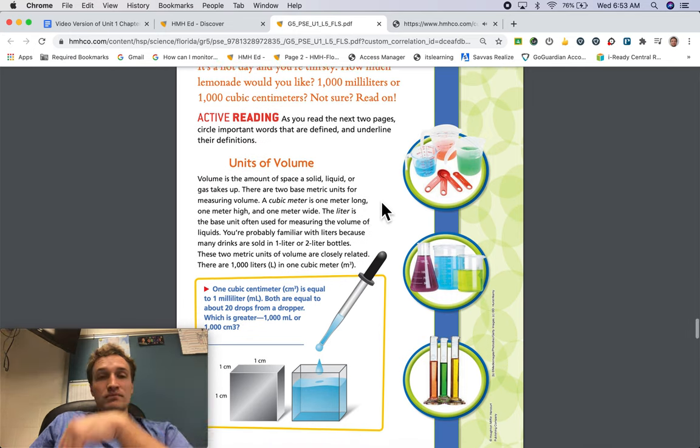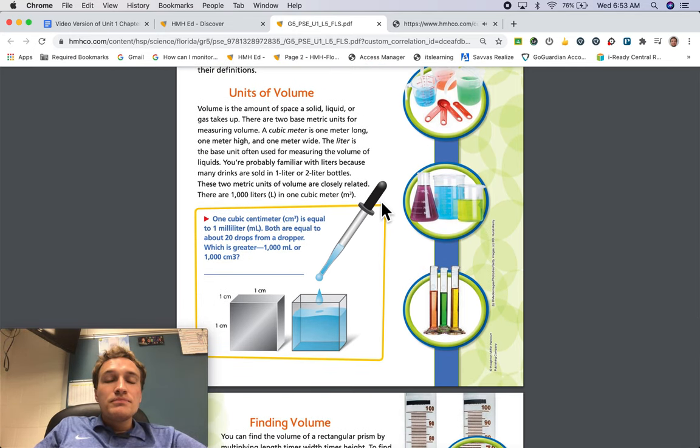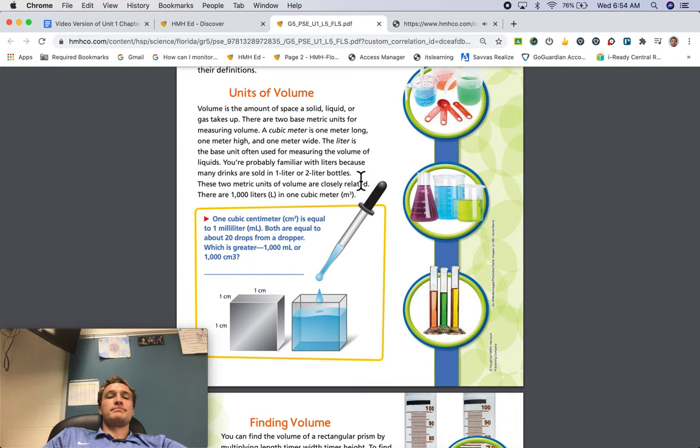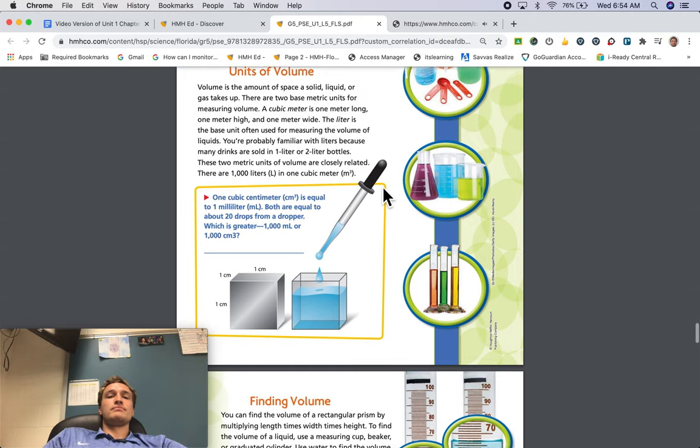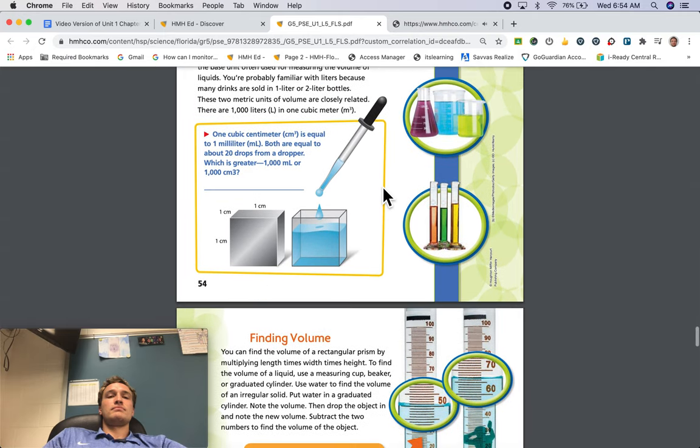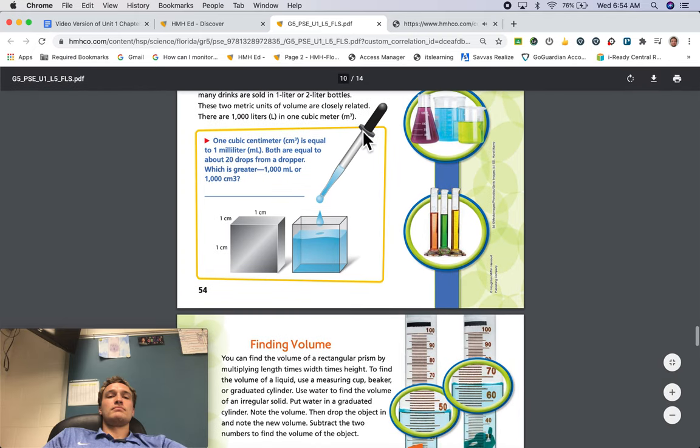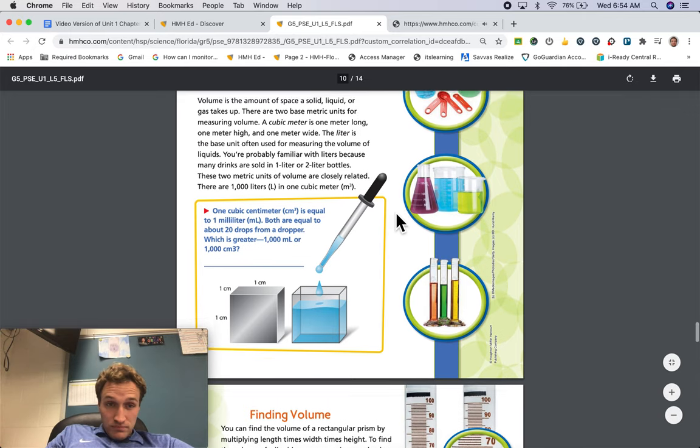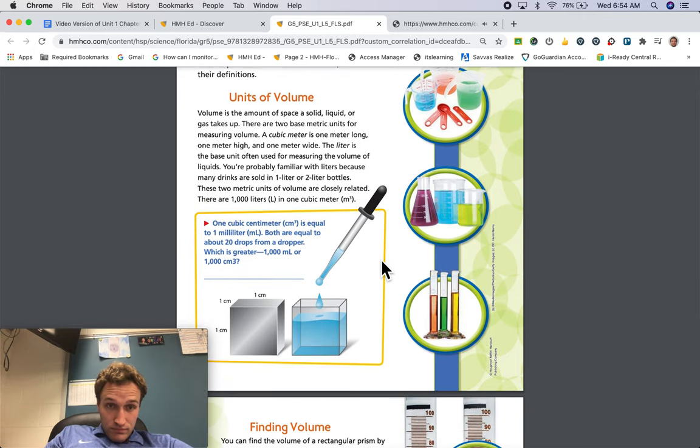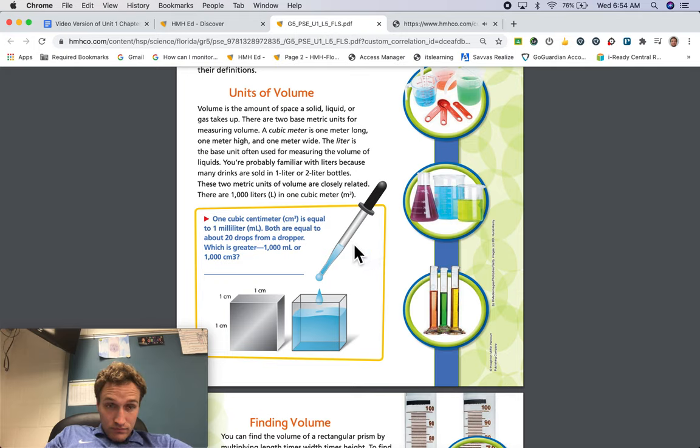Units of volume. Volume is the amount of space a solid, liquid, or gas takes up. There are two base metric units for measuring volume. A cubic meter is one meter long, one meter high, and one meter wide. The liter is the base unit often used for measuring the volume of liquids. You're probably familiar with liters because many drinks are sold in one liter or two liter bottles. These two metric units of volume are closely related. There are 1,000 liters, L, in one cubic meter, M cubed. One cubic centimeter, centimeters cubed, is equal to one milliliter, ML. Both are equal to about 20 drops from a dropper. Which is greater, 1,000 milliliters or 1,000 cubic centimeters?